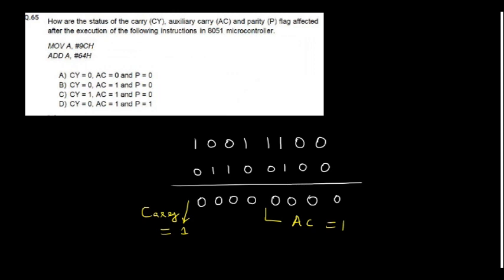How are the carry, auxiliary carry, and parity flags affected after execution of the following instruction in the 8051 microcontroller? The accumulator is loaded with 9C hex, then 64 hex is added. After 4-bit addition we get one auxiliary carry, and a carry is also generated. So we look for the option with carry equal to 1 and auxiliary carry equal to 1 — option C is the right answer.